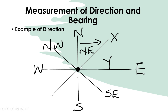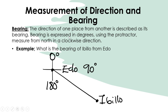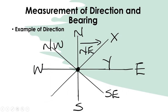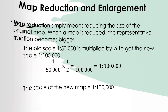This brings us to bearing. Bearing is the direction of one place from another. The direction of one place from another is described as its bearing. Bearing is expressed in degrees using a protractor, measured from north in a clockwise direction — starting from north, going clockwise, and coming back to north.